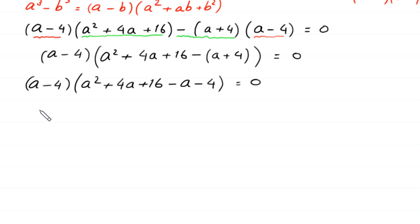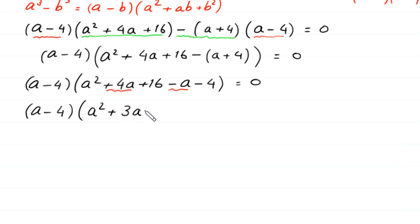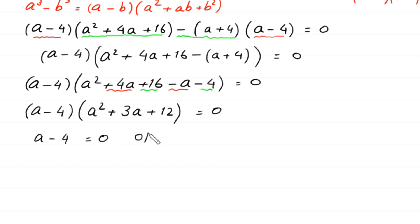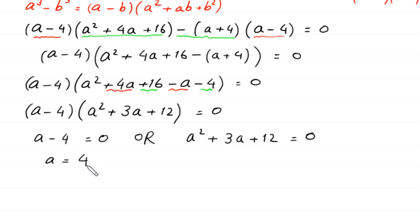Expanding inside the bracket, the negative sign changes the signs: positive a becomes negative a and positive 4 becomes negative 4. So we get (a minus 4) times (a squared plus 3a plus 12) equals 0. From here, either a minus 4 equals 0, giving us the first solution a equals 4.